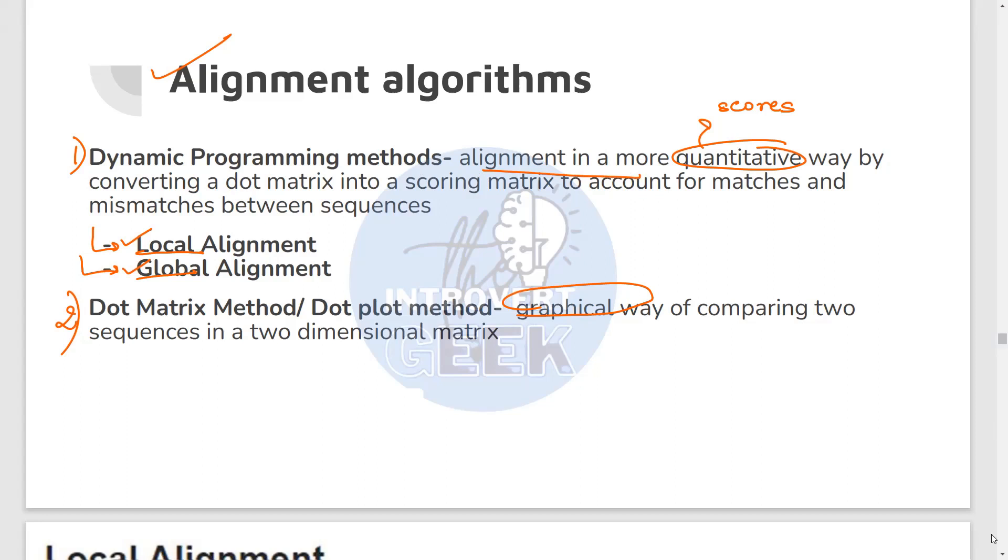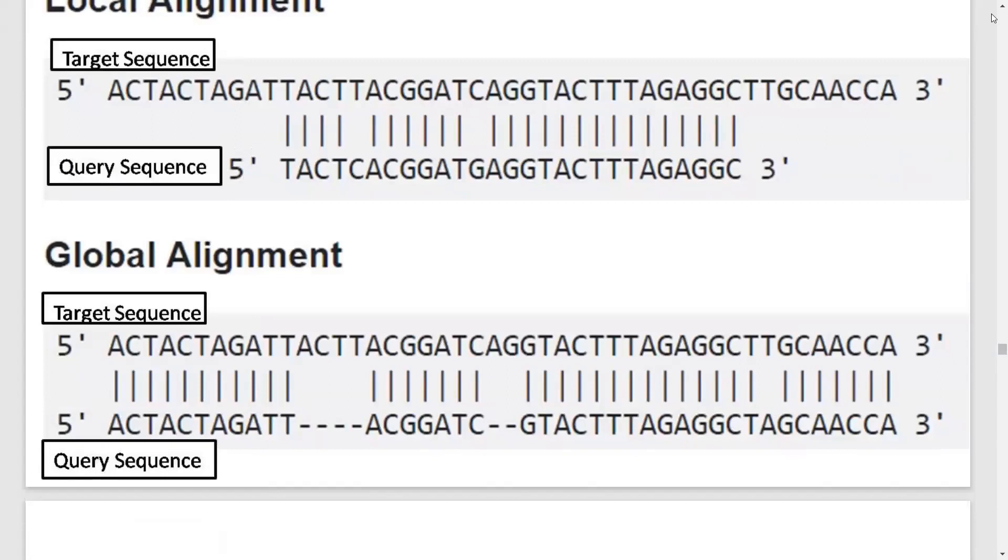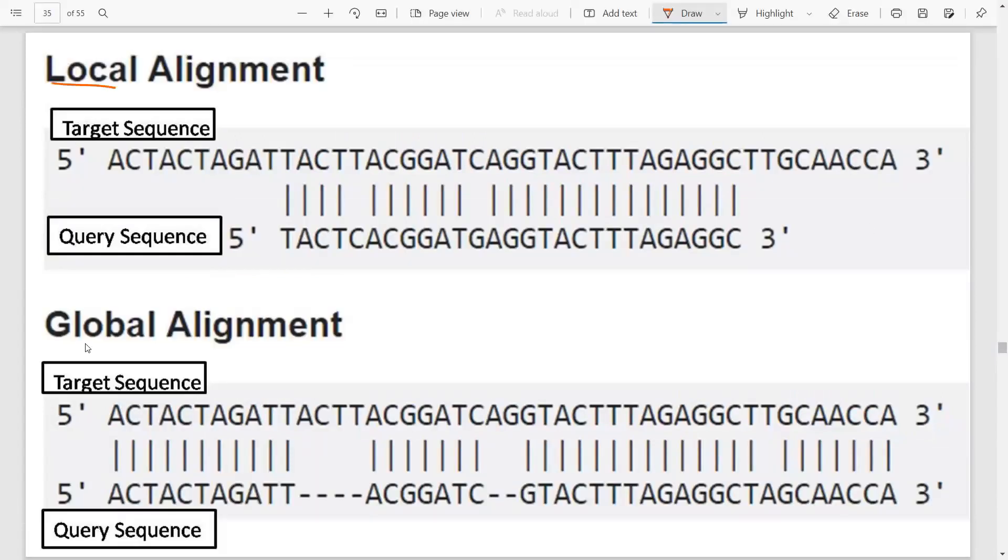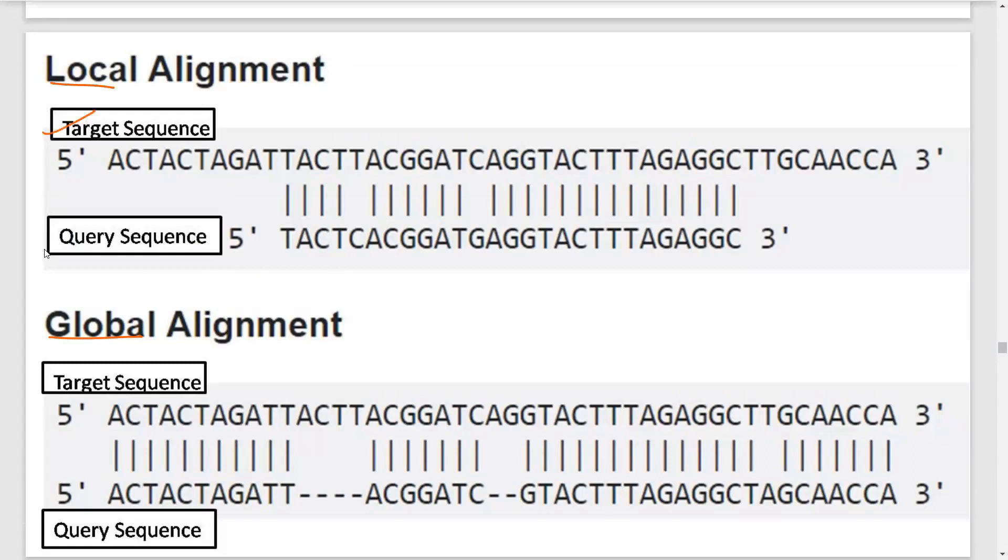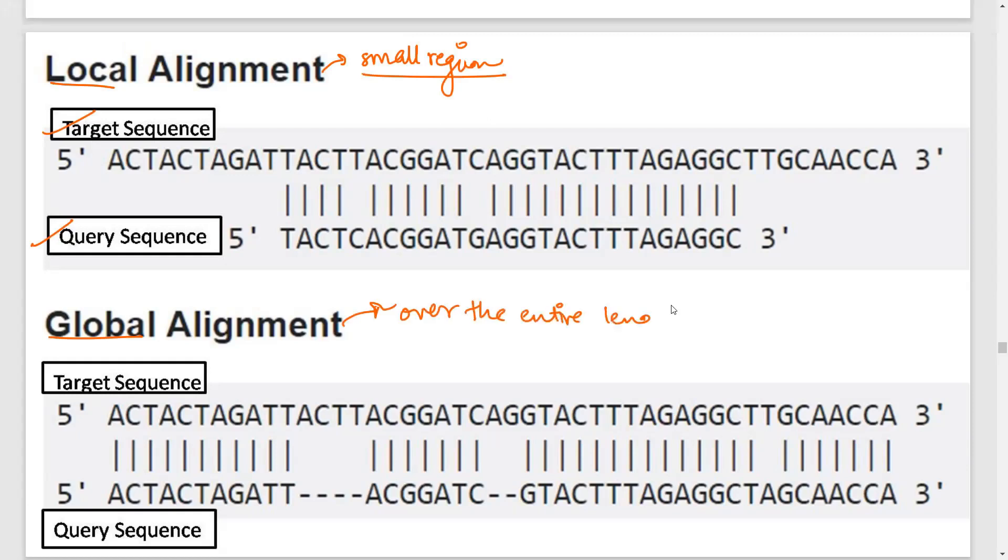Now briefly, if I have to introduce you to the differences between the two, the dynamic programming method is a quantitative way where you actually get alignment scores, whereas the dot matrix is a graphical or qualitative way to just see the sequence similarity between the two residues. Now in dynamic programming, you have two different types of alignments. So depending upon what kind of alignment you have, different algorithms. So for a local alignment, you have a different algorithm. For a global alignment, we have a different algorithm. When to go for which algorithm, we are going to now understand.